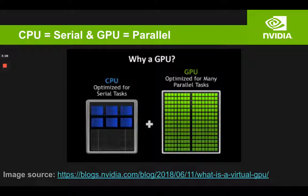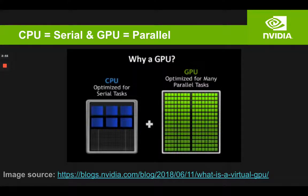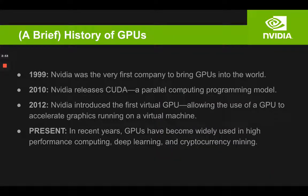It is worth mentioning that a CPU may have like four, six, or eight cores, whereas a GPU may have thousands of cores. That's the key difference that you should take away.